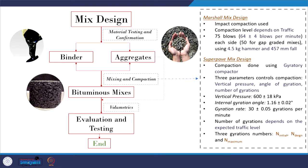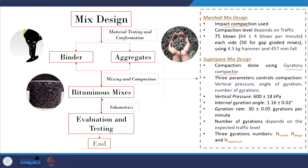Let us continue and see the further steps involved in the mix design process, specifically the Marshall and Superpave methods simultaneously, so we can understand the differences between them. After selecting materials including binder and aggregates and performing design aggregate gradation, we proceed to mixing and compaction — mixing the binder and aggregates together and compacting to produce a cylindrical bituminous mixture for laboratory investigation.